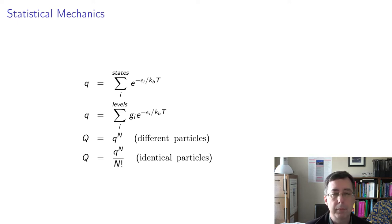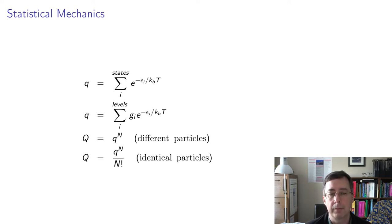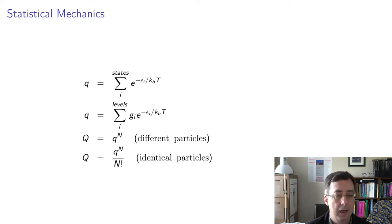From these molecular partition functions, we create an overall partition function capital Q by raising little q to the N power, where N is the number of particles. If all the particles are identical, we divide by N factorial. Explicitly computing this would be very difficult if N were something like Avogadro's number, but we do it pencil and paper and manipulate things so that everything is still computable.